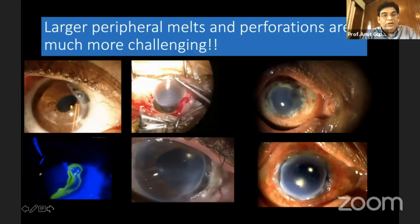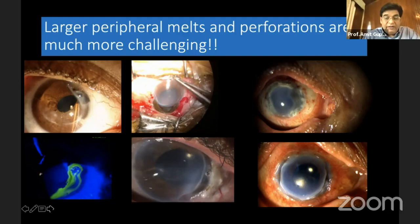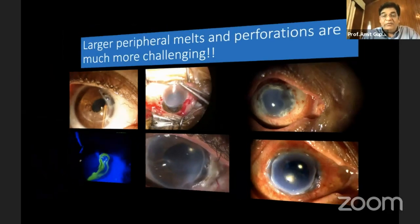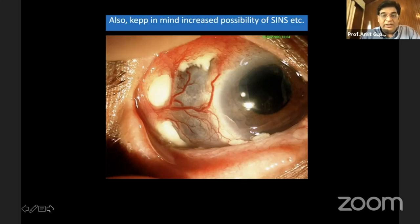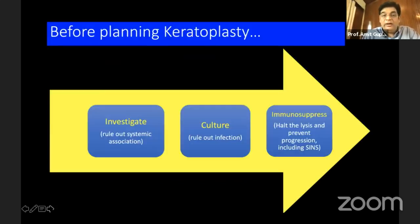On the other hand, larger peripheral melts and perforations are much more challenging, because they involve a huge area of cornea and have irregular thinnings. Sometimes we don't like to go full thickness because it's so much more challenging — it induces a lot of astigmatism, greater chances of graft rejection, vascularization, and other things, including the possibility of surgically induced corneal necrosis in these patients.